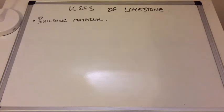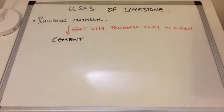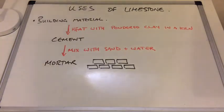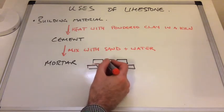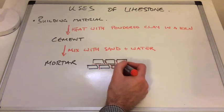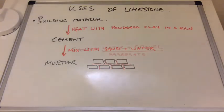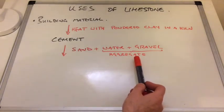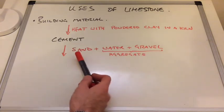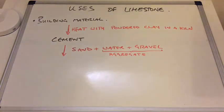As well as limestone itself being used as a building material, you can make other building materials from it. If you heat limestone in a kiln with powdered clay, you make cement. Mix cement with sand and water and you get mortar — the substance used to stick bricks together. If you mix cement with sand, water, and gravel (called aggregate), you make concrete.